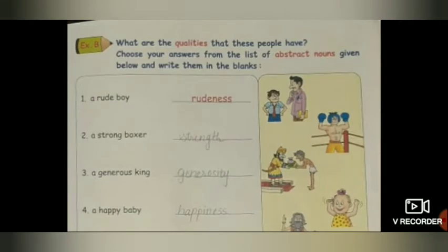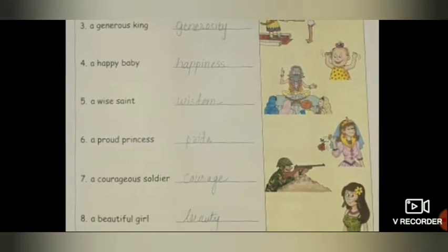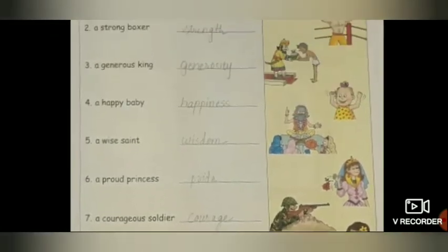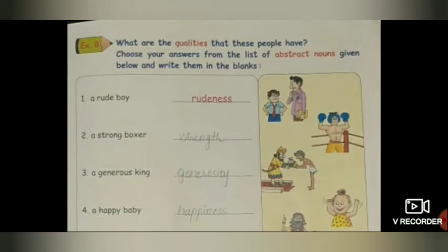Next exercise: What are the qualities that these people have? Yahan pe picture diya gaya hai. Usmein logon ki kya qualities dikhai de rahi hain? Choose your answers from the list of abstract nouns given below and write them in the blanks. First is a rude boy. Jo rude boy hota hai, uska kya hota hai? Rudeness.